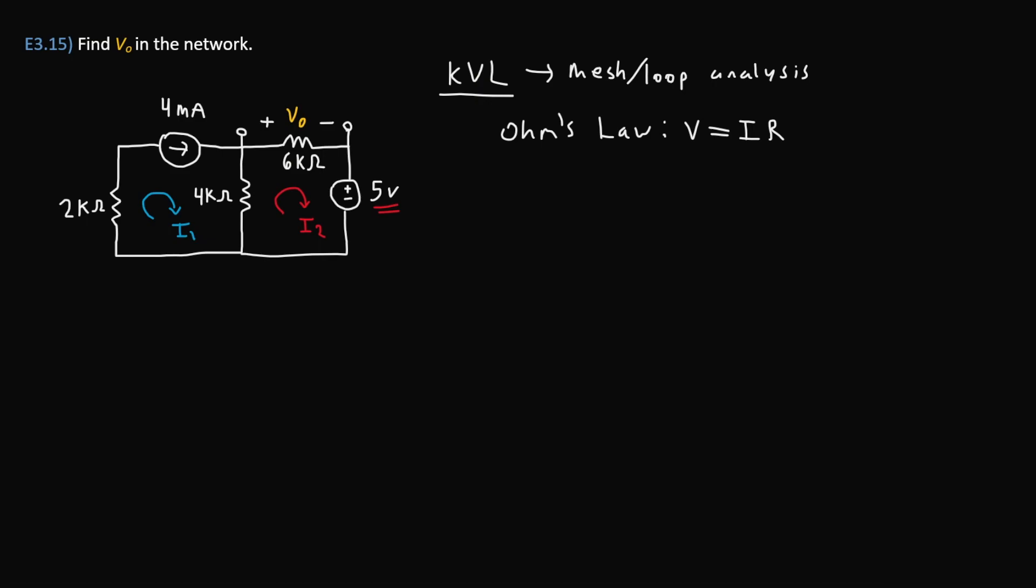Knowing this, we can already derive an expression for V₀. Since V₀ is the voltage drop across the 6 kilo-ohm resistor, we can write V₀ is equal to the current I₂ times the 6 kilo-ohms. That right there will be our first equation. Now that we have that voltage V₀ figured out, we can move on to our actual KVL equations.